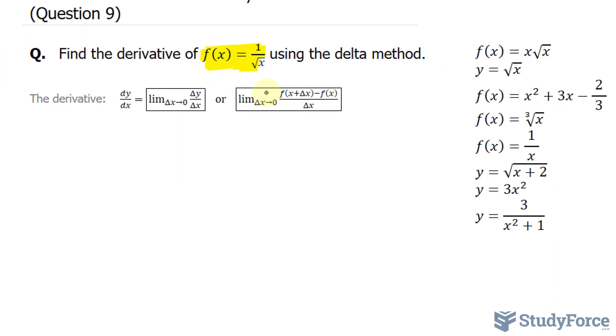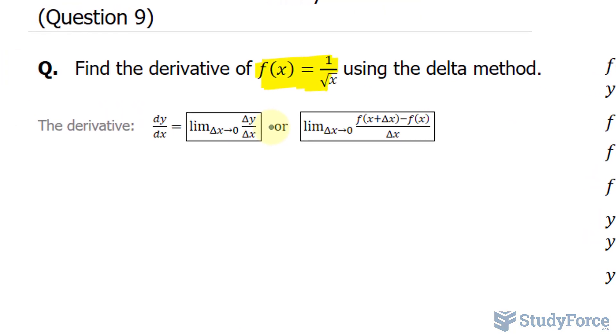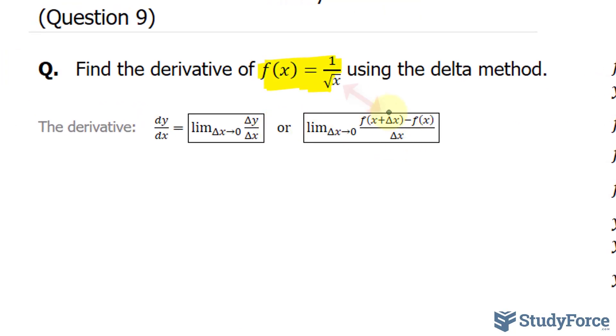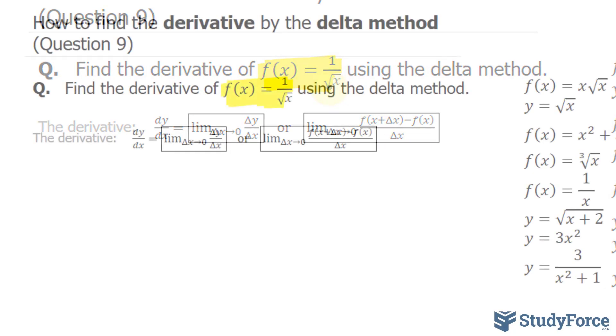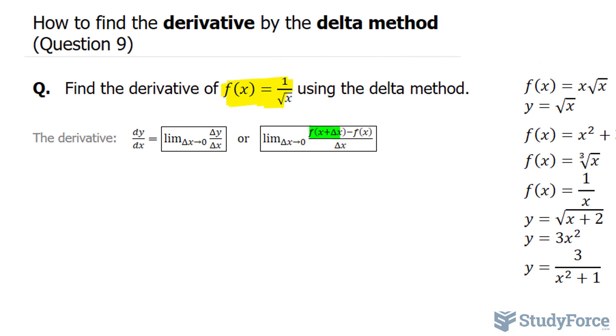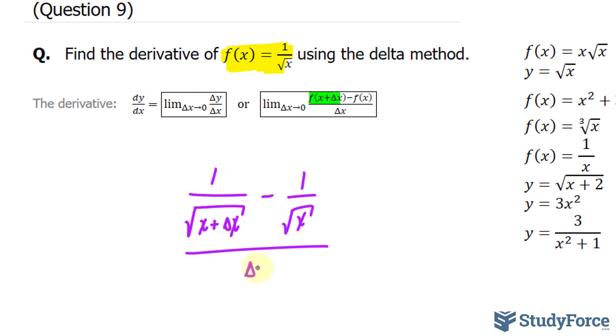So just as before, this is the limit that we want to take, and we want to substitute this expression x plus delta x right into the x part. So for this term, I'll take 1 over the square root of x plus delta x, that's the highlighted part there, minus 1 over the square root of x over delta x.